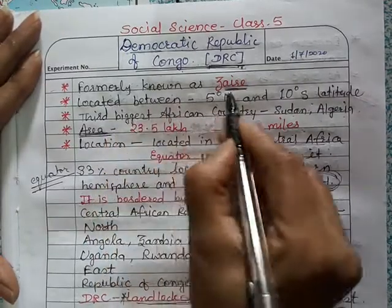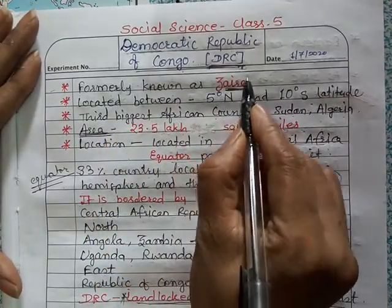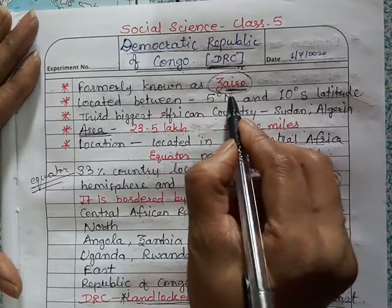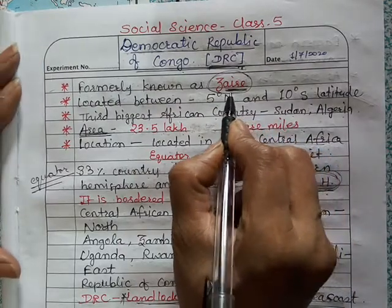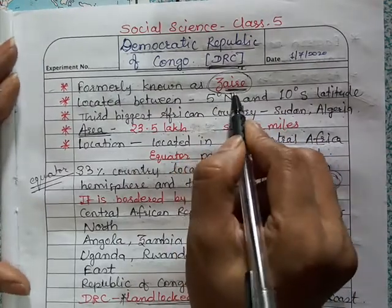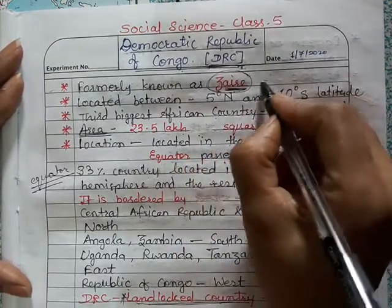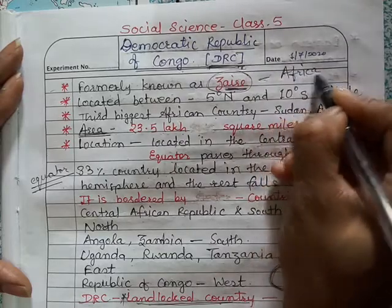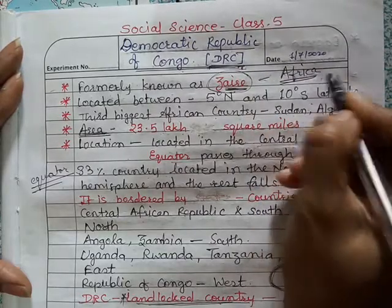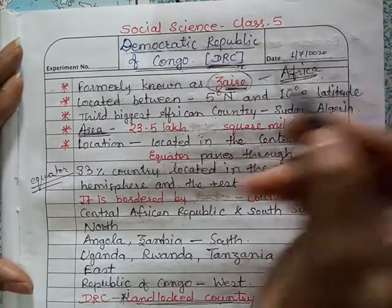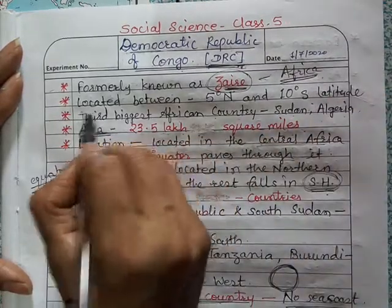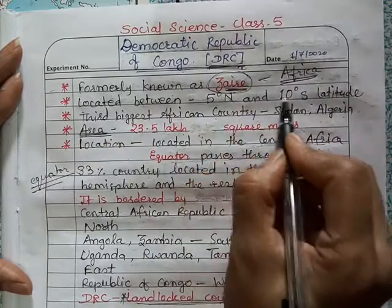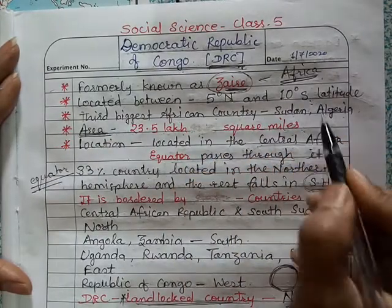This country was formerly known as Zaire — its old name is Zaire. It is located in the Africa continent. It is located between 5 degrees north and 10 degrees south latitude.